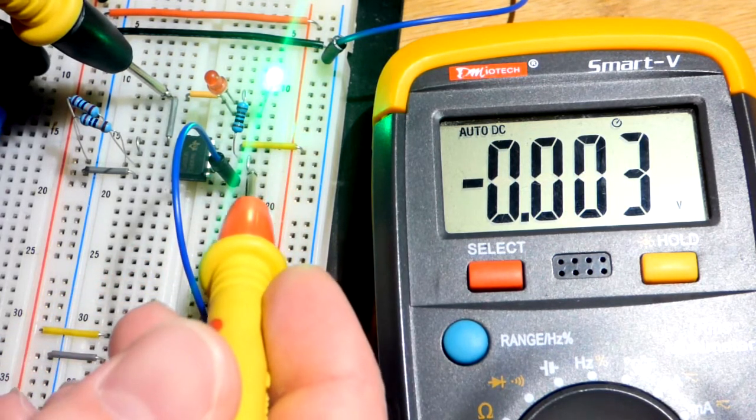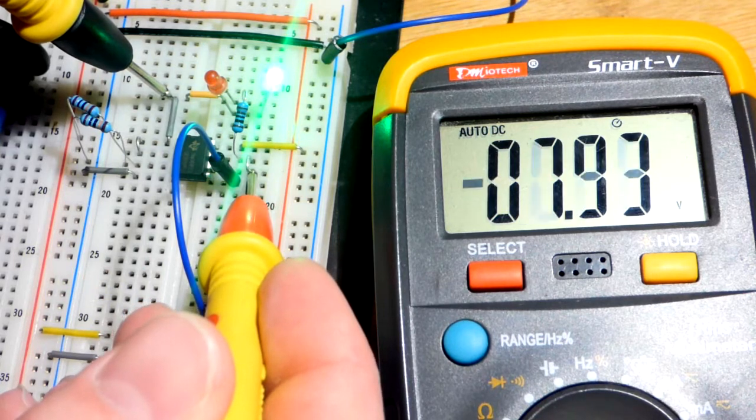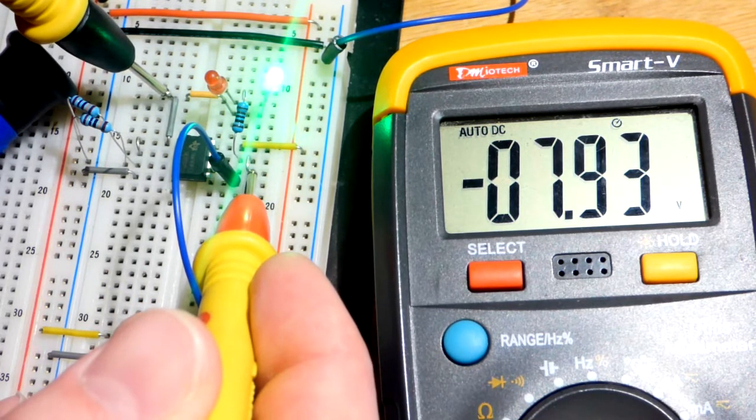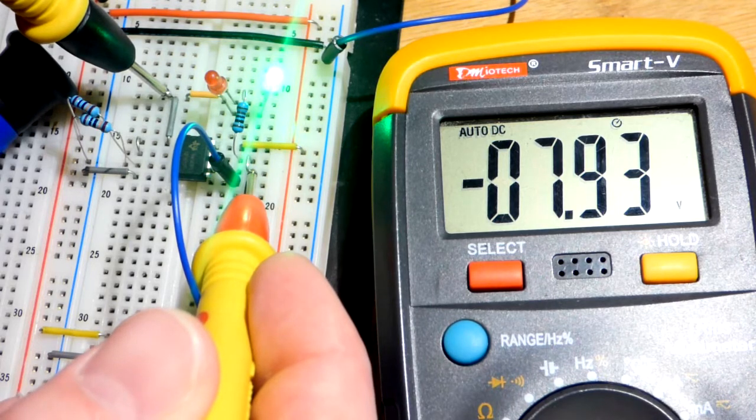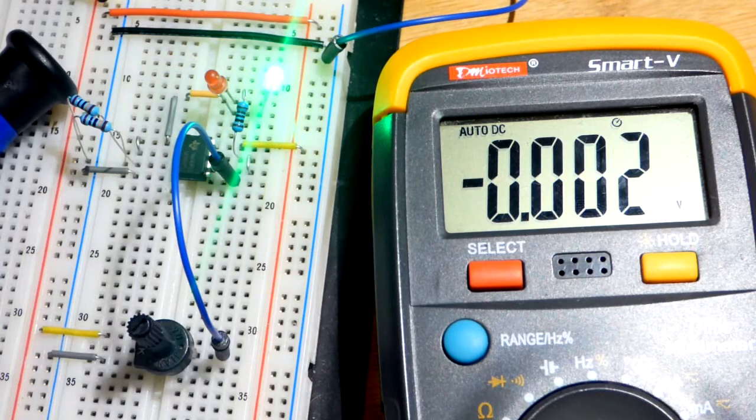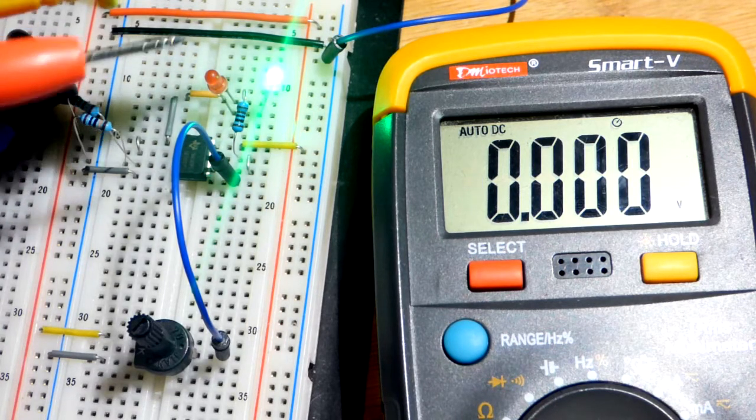So it's negative 9 volts. That's what we expect. And we come up here to where the output is. And there you can see it doesn't make it all the way to the rail, to the negative direction either. It's a little short.